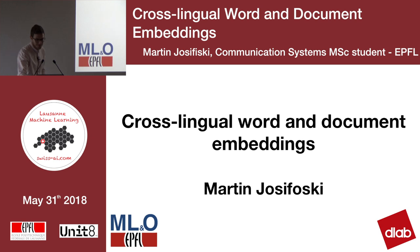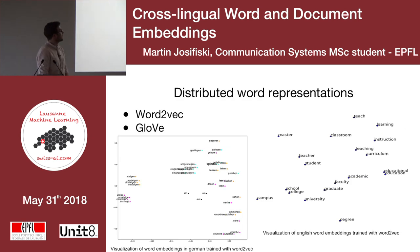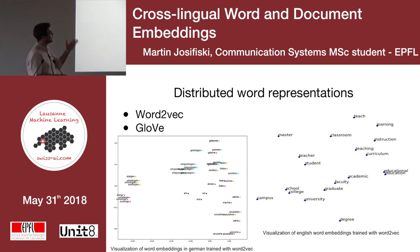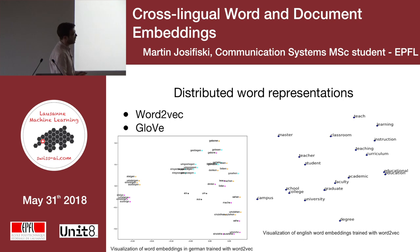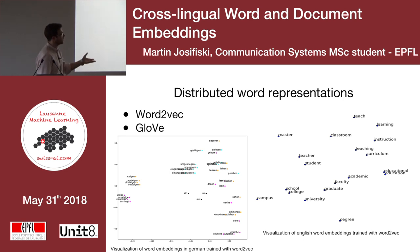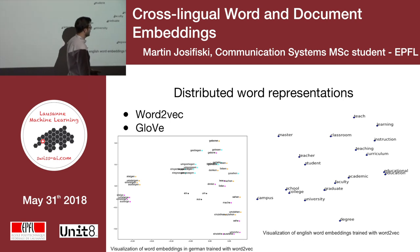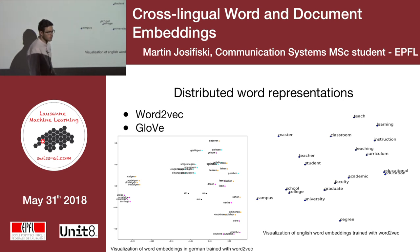Let's start. Before the introduction of Word2Vec and GloVe, words were treated as atomic units. The issue with this approach is that the model considers 'dog' and 'puppy' as similar as 'dog' and 'airplane,' which certainly is not the case. Word2Vec and GloVe aim to learn similar vector representations of words that are close to each other semantically. In this toy example learned from Word2Vec, we see 300-dimensional word representations projected in two-dimensional space. Words like 'educational' and 'education,' which are close semantically, are close in the embedded space, and words like 'school,' 'college,' 'university' are again close to each other.